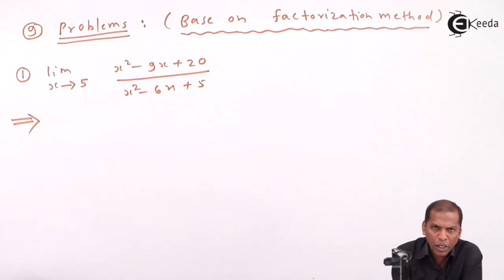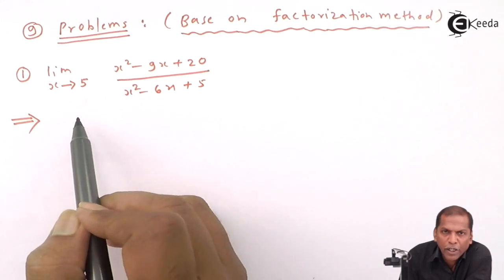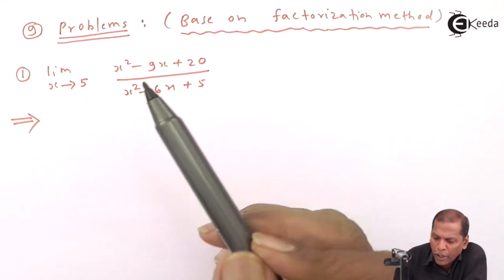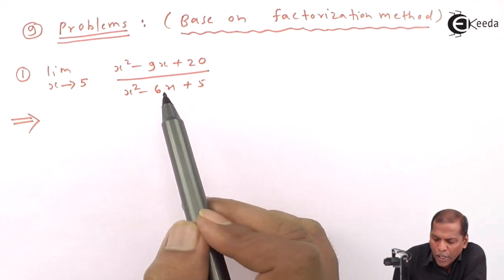Hello friends, now we see subtopic 9 that includes problems based on factorization method of chapter limits. Problem number one is: limit as x approaches 5 of (x² - 9x + 20) divided by (x² - 6x + 5).